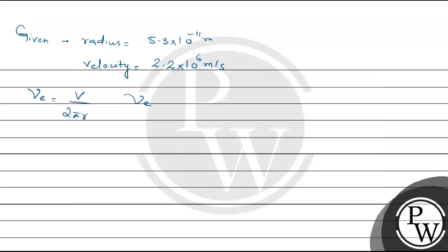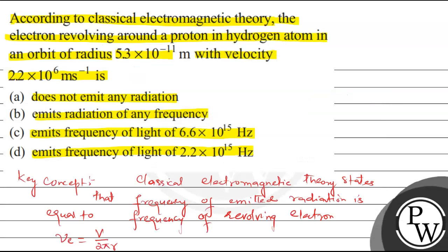So here, νE = 2.2 × 10⁶ divided by 2 × 3.14 × 5.3 × 10⁻¹¹. The answer for this question will be Option C. Hope you understand the question. Best of luck.